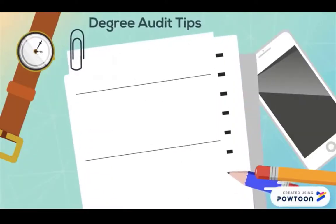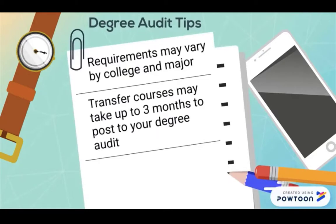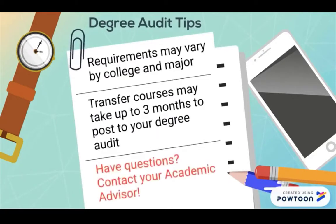Degree Audit Tips: Requirements may vary by college and major. Transfer courses may take up to three months to post to your degree audit. Have questions? Contact your academic advisor.